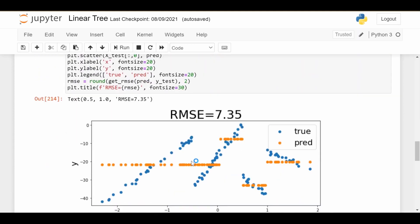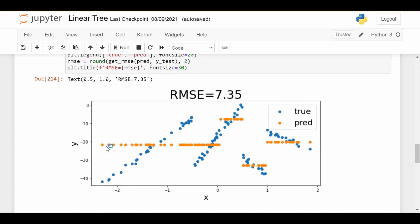What if we use a standard regression tree instead? Then we have something that looks like this. You can see it's capturing the average of these four clusters as flat predictions in each region. The root mean squared error is actually better, but you can see there's still improvement to be made.